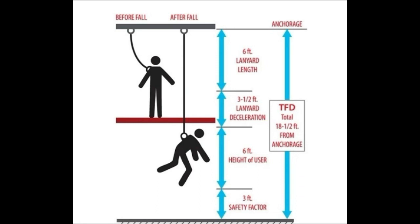For example, if a worker is using a six-foot lanyard and has a six-foot height, the total fall distance would be 18.5 feet (5.6 meters), calculated by adding the free fall distance (six feet) and the deceleration distance (maximum 3.5 feet allowed by OSHA for elongation of the energy absorber).